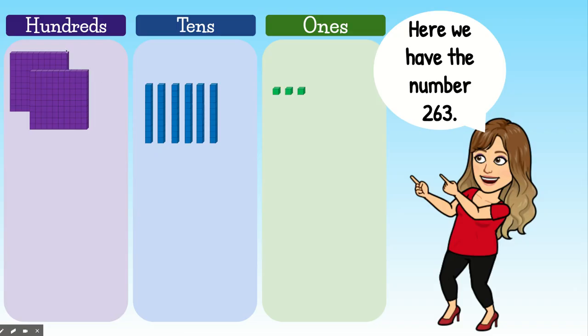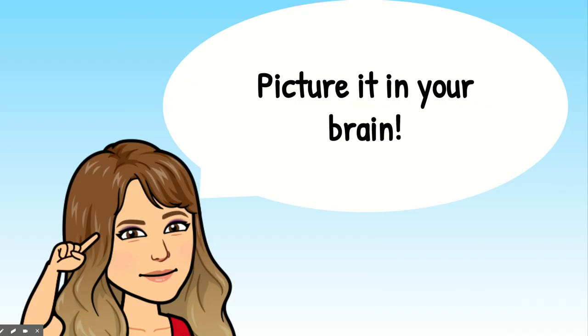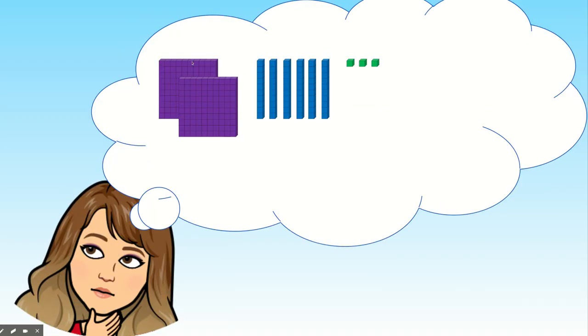So here we have the number 263. What is 263 plus 10? Picture it in your brain. Picture yourself having two hundreds, six tens, and three ones. And then you're going to add 10.